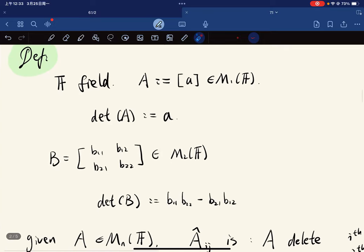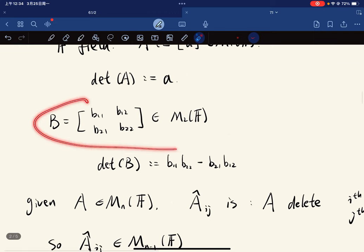So given a one-element matrix, we define the determinant to be the element inside. And for a 2 times 2 matrix, we define the determinant to be this times this, subtract this times this.